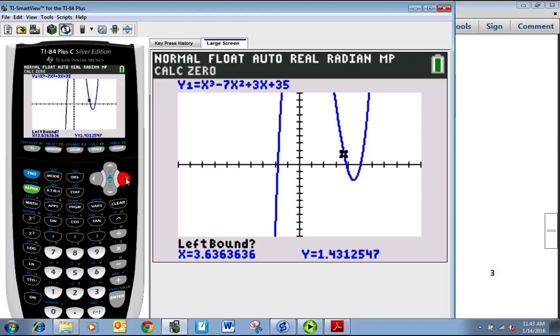So I have to repeat this again. Second trace, 2 for zero. Now I'm going to right arrow over to get close to the second zero. Left bound, we want to be a little bit left of our zero. Then we want to be a little bit right of it. You've got to make sure that your signs are changing. When I did left, my Y was positive. When I do right, my Y is negative. If your Y's don't change sign, it's going to give you an error. For this one, we get 3.83 approximately.